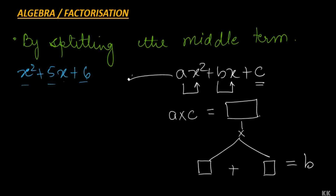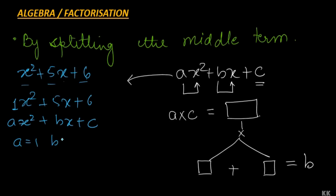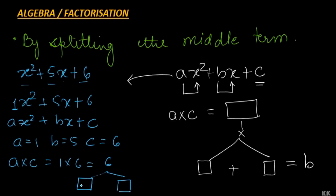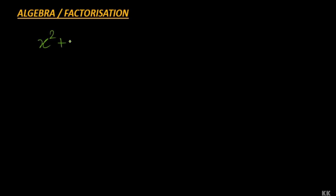Let us apply this to x square plus 5x plus 6. Here a is 1, b is 5, and c is 6. We multiply a and c to get 1 into 6, which is 6. We need to write 6 as a product of two factors such that their sum gives the middle term 5. Since 6 equals 2 into 3, and 2 plus 3 equals 5, the middle term 5x can be split as 2x plus 3x.